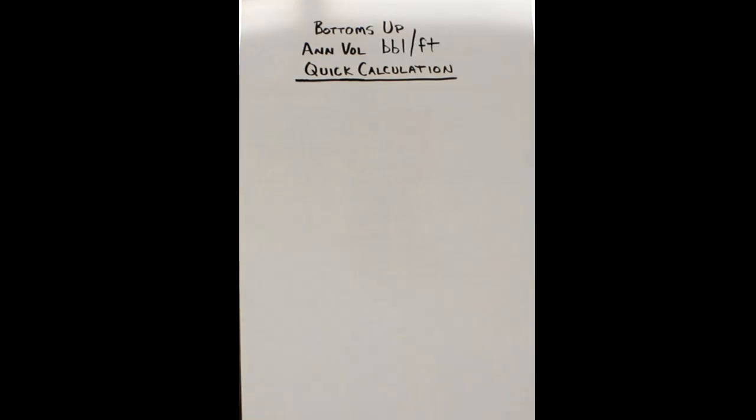All right, so now we'll hit you guys with the barrels per feet calculation. Same type of thing, a little different numbers, that's all. Okay, we got a hole here which is 8 and 3/4 inches wide ID, and we got some 5 inch drill pipe in that hole there.